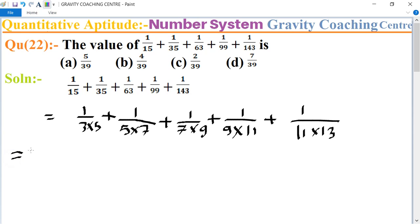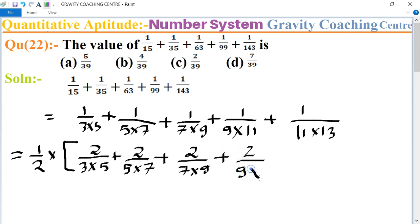Now we take half and multiply all the numbers by 2, so 2×2 upon 3×5, plus 2 upon 5×7, plus 2 upon 7×9, plus 2 upon 9×11, plus 2 upon 11×13.